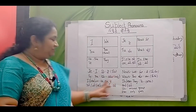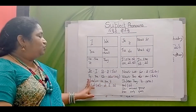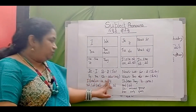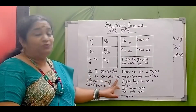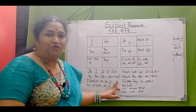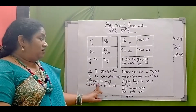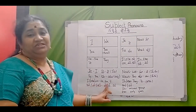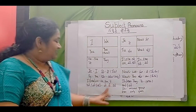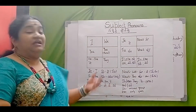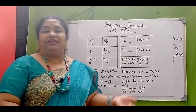Je means I. Tu means you — informal way. Il and elle mean he, she, it. Atadu (he) and aame (she) — okay.